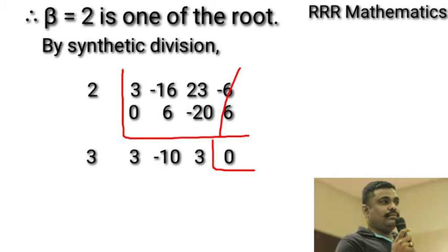And I will try with 3. Here, 3, -10, 3, 0. Second step: 0, 9, -3. Three and -3 cancel. Finally, we are getting 3, -1, 0.